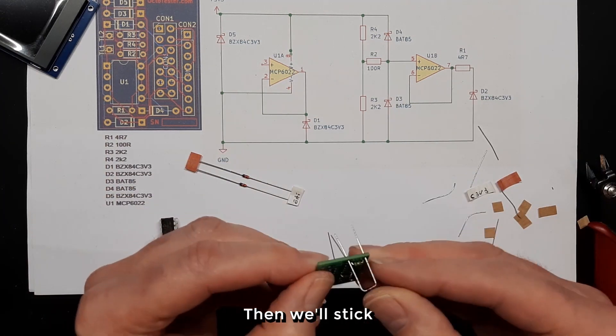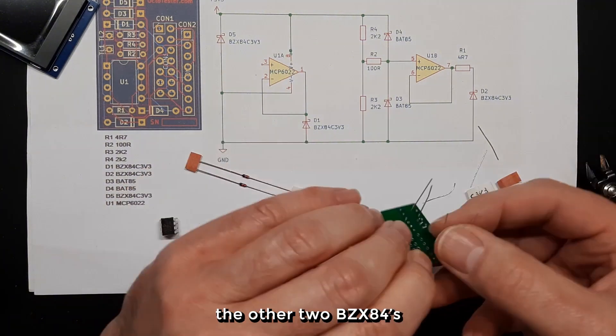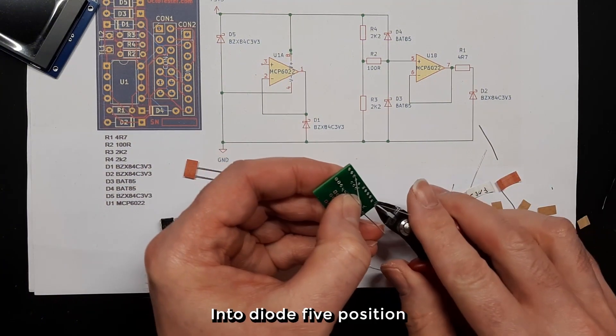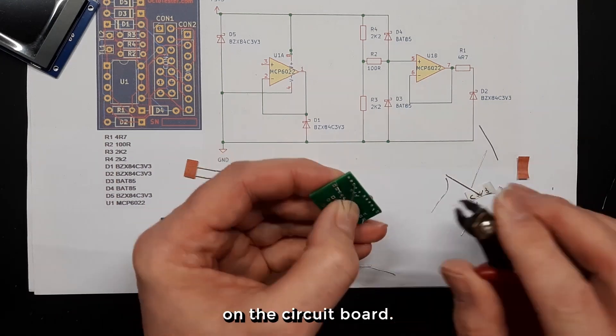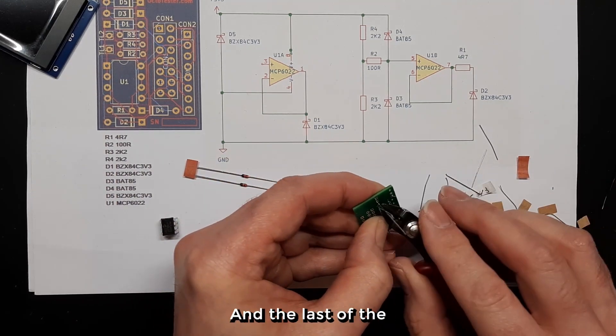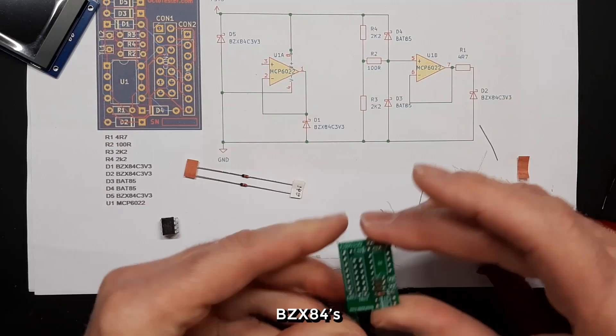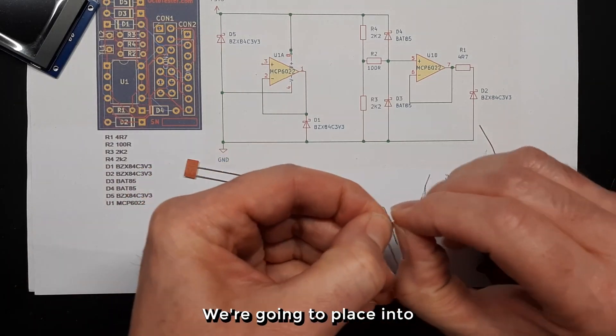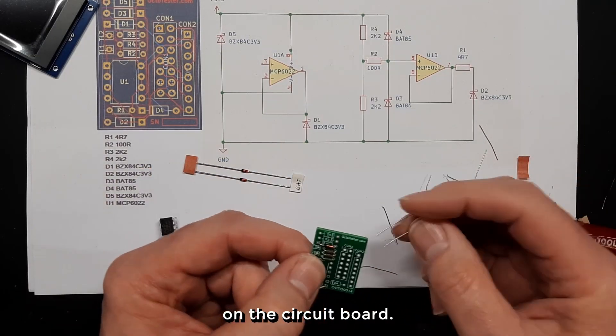Easy, right? Then we'll stick the other two BZX84s into diode 5 position on the circuit board, and the last of the BZX84s we're going to place into D2 position on the circuit board.